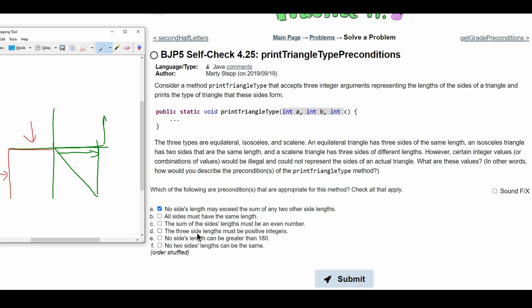For D, we have the three side lengths must be positive integers. They do have to be positive integers. Even or negative does not matter, but they do have to be a positive integer. They do have to be a real number. So we are going to check that.